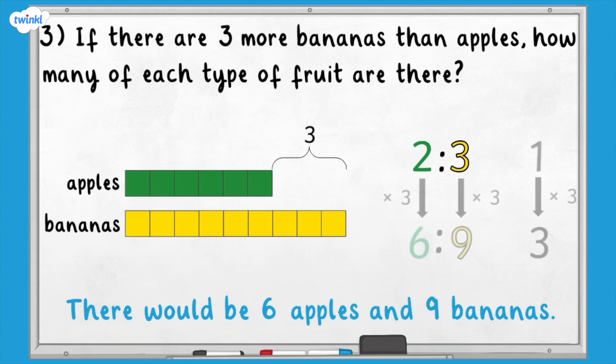This is how it would look without using the bar model. We know that the difference was three times greater, so we also need to multiply the numbers in the ratio by three.